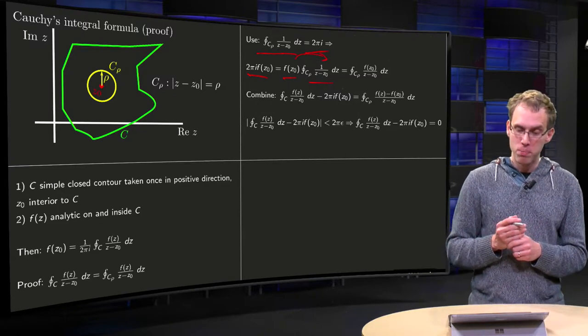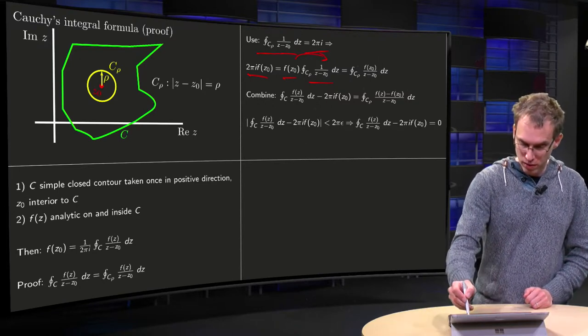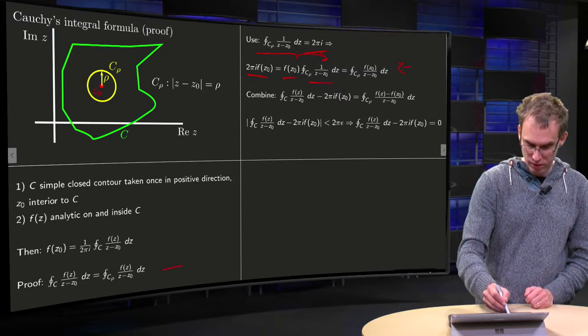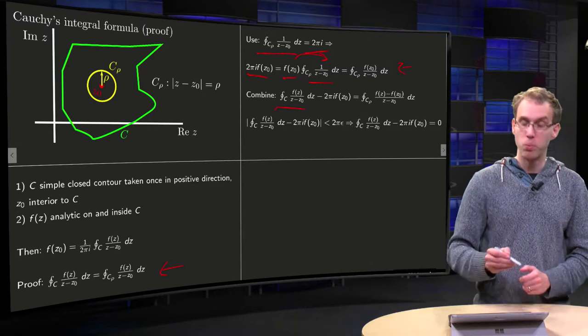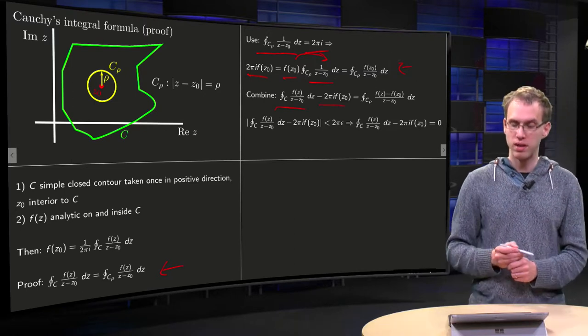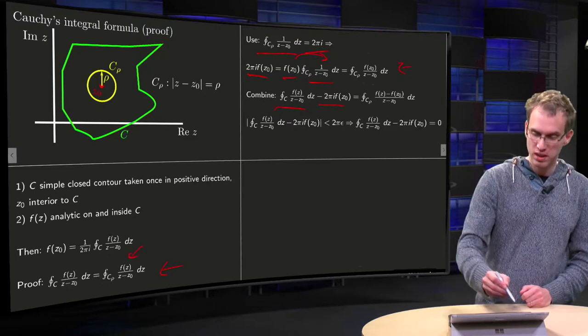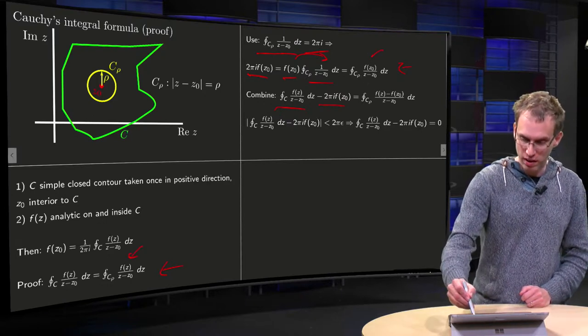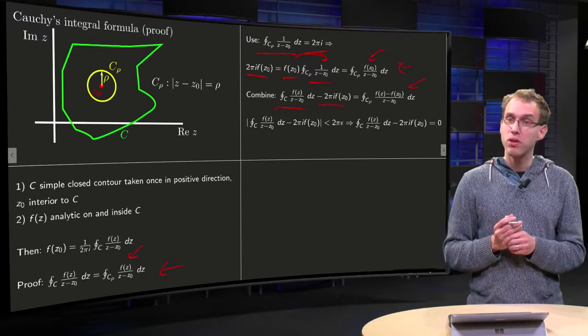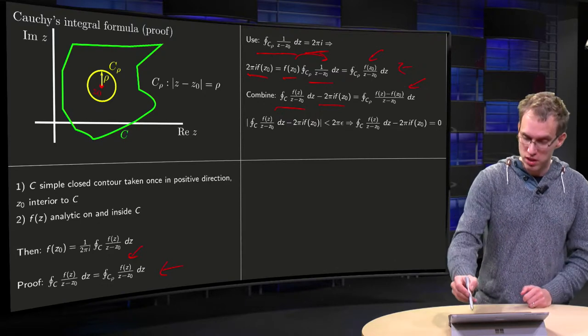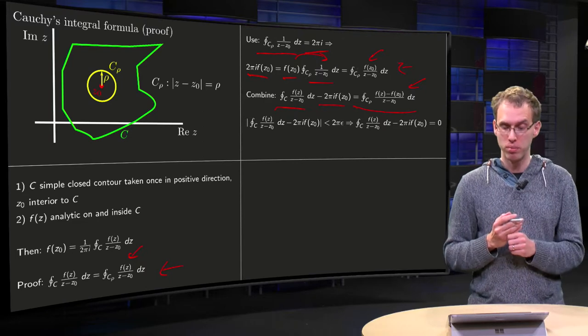So if you combine those two equalities, this one and this one, your integral you want to know minus 2 pi i times f(z0) equals the integral with f(z) inside minus the integral with f(z0) inside. And now, the only thing you want to show is that this second integral here equals zero, because then we are there, then you have Cauchy's integral formula.